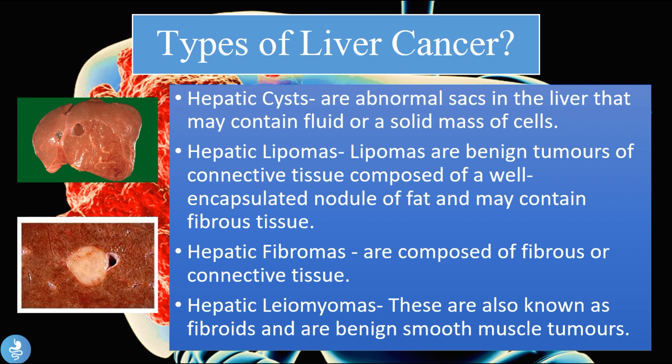We then have hepatic fibromas, which are composed of fibrous or connective tissue. We also have hepatic leiomyomas, also known as fibroids, which are benign smooth muscle tumors.